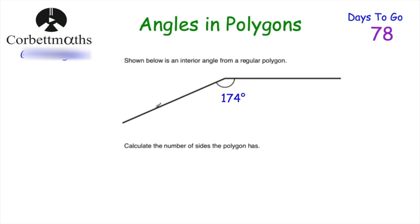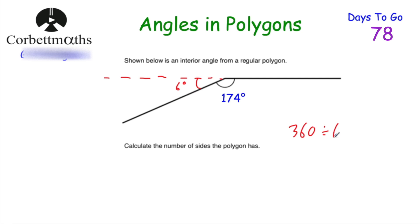Our last question: shown below is one interior angle of a regular polygon measuring 174 degrees — calculate the number of sides. Because it's regular, all interior angles are 174 degrees. First find the exterior angle: 180 − 174 = 6 degrees. All exterior angles must add to 360 degrees, so 360 ÷ 6 = 60. There are 60 exterior angles, which means there are 60 sides. This regular polygon has 60 sides.